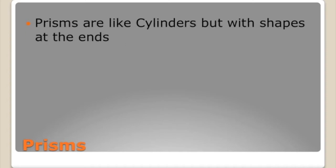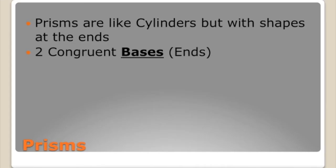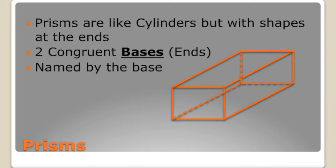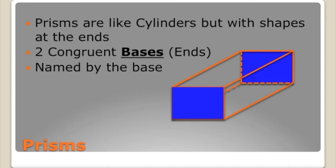Prisms — what exactly is a prism? A prism is basically like a cylinder, but it has shapes at the ends. Whereas a soda can is long with two circles at the ends, a prism has different shapes. It has two congruent bases, which are the ends. And it's named by the base. So here we have a prism with rectangles at each base, and it's called a rectangular prism because there are rectangles at the bases.